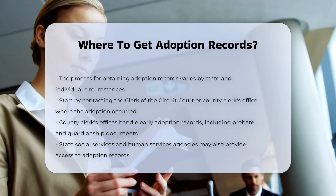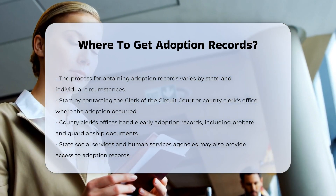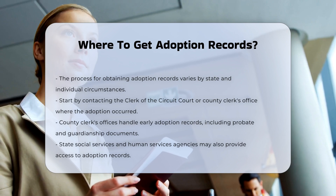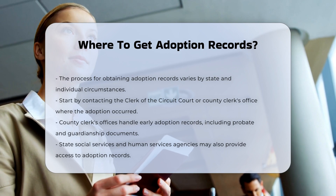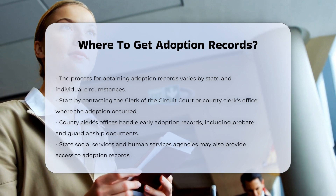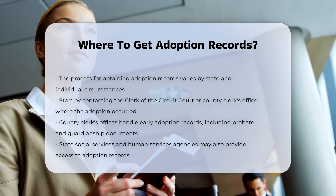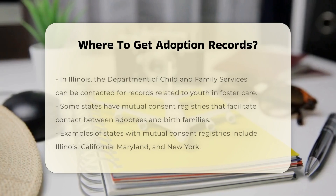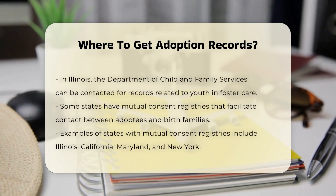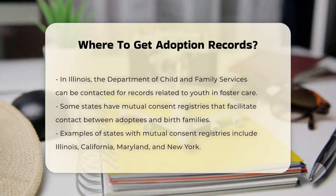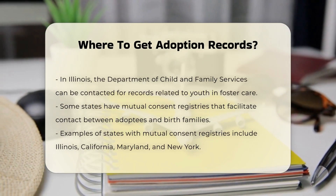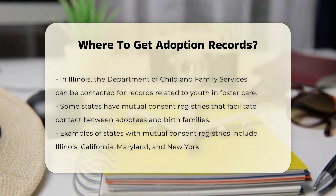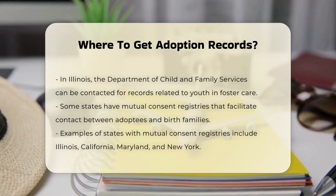Adoption records might also be available from state social services and human services agencies that provide adoption services. For example, in Illinois, adopted youth who were in foster care can contact the Department of Child and Family Services for their adoption records.